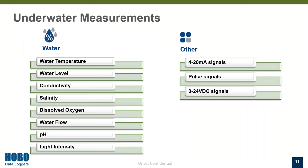For this presentation, we're going to be focusing mostly on our underwater data loggers. Some underwater measurements you can capture with our data loggers are water temperature, water level, conductivity, salinity, water flow, pH, and light intensity. Some other options include 4-20 milliamp signals, pulse signals, and DC voltage signals. This proves beneficial if you have a third-party sensor with an analog output — you can connect it to one of our data loggers with the appropriate input adapter cable.